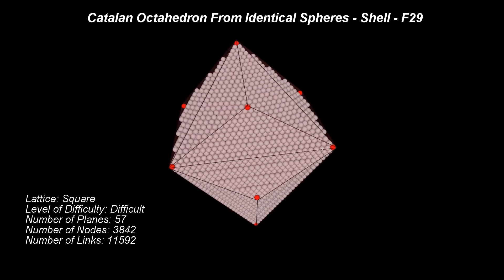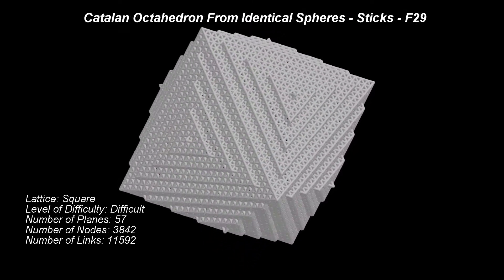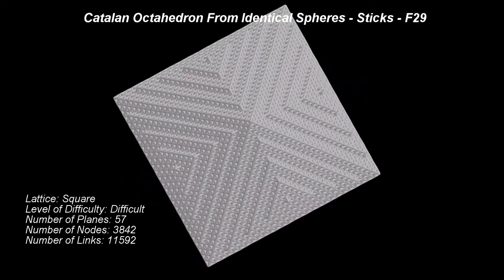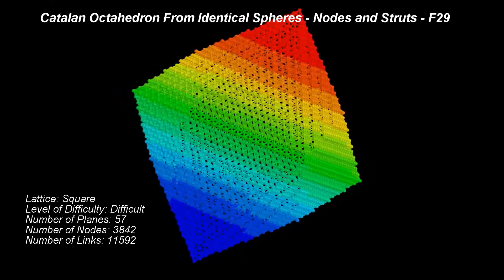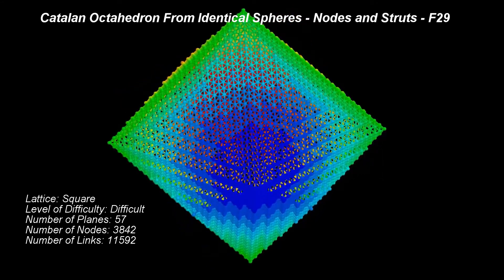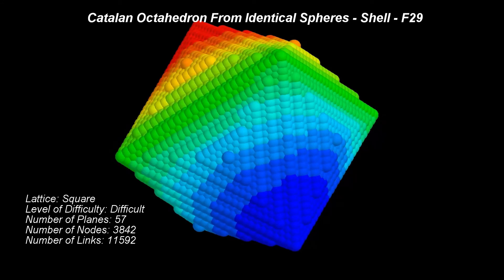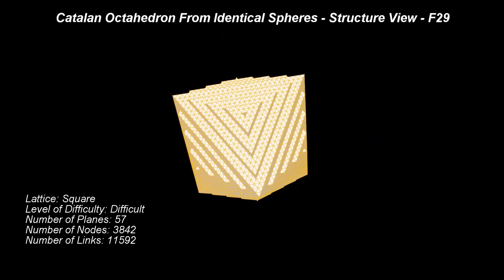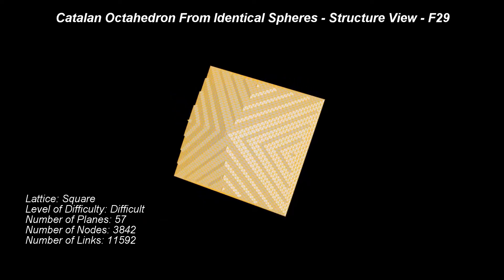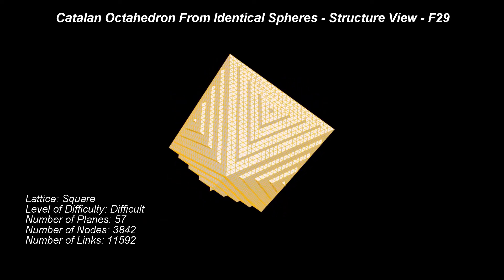The next few views show this structure in its entire splendor. As seen before, complex patterns in CPS are formed by a relatively large number of spheres. Assembled as a platonic structure, this pattern requires 3842 nodes and 11592 struts.